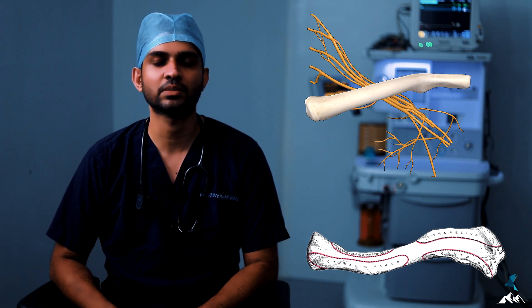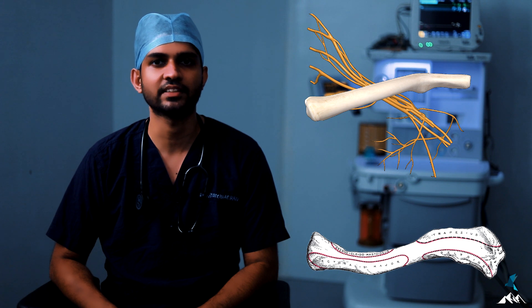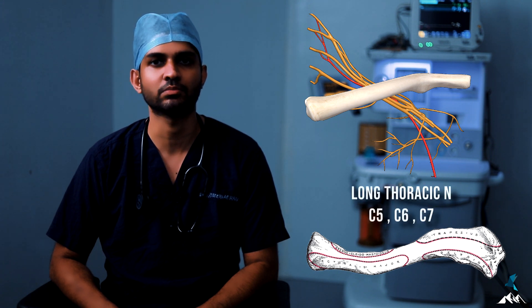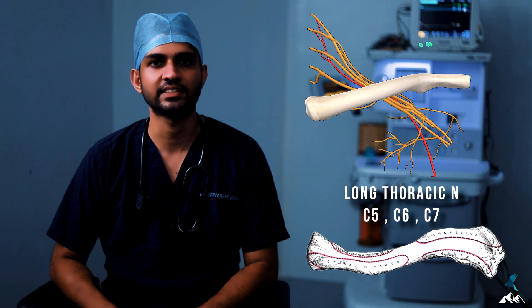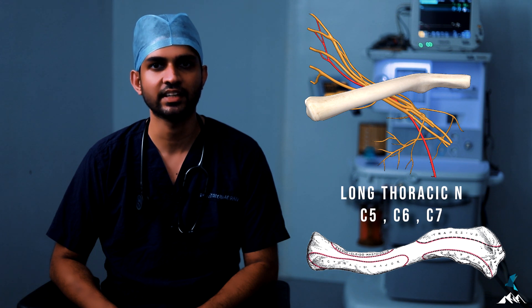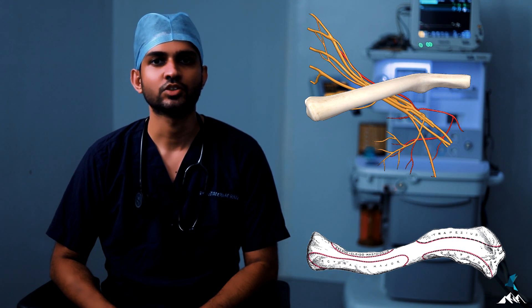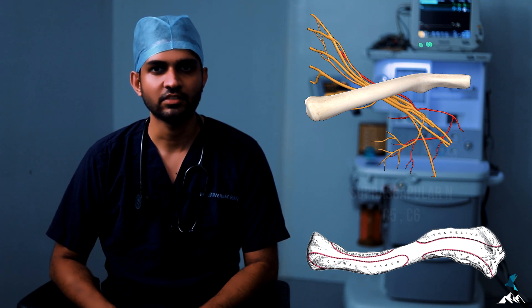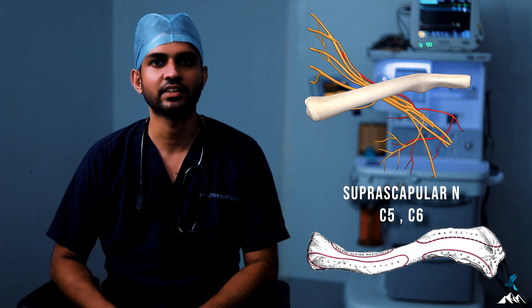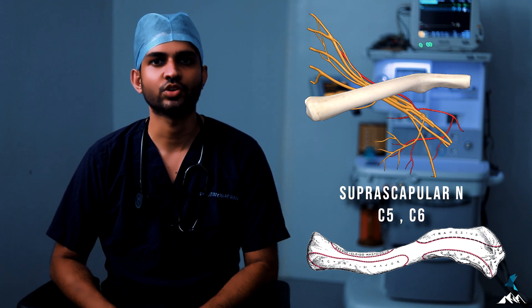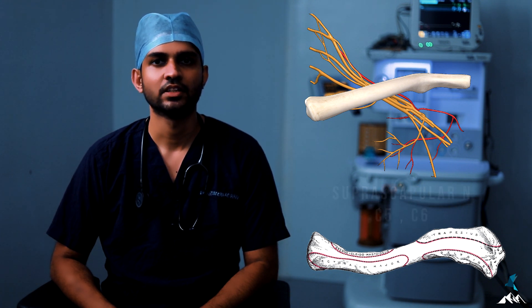Other nerves supplying the clavicle include the long thoracic nerve arising from C5, C6, and C7, and the suprascapular nerve arising from the upper trunk, root value C5 and C6. So what we have to understand is that it is mainly the C5 and C6 roots which supply the clavicle.